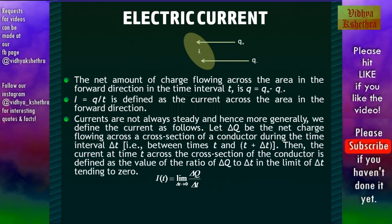Currents are not always steady and hence more generally we define the current as follows. Let ΔQ be the net charge flowing across a cross section of a conductor during the time interval ΔT, that is between times T and T + ΔT. Then the current at time T across the cross section of the conductor is defined as the value of the ratio of ΔQ to ΔT in the limit of ΔT tending to 0.